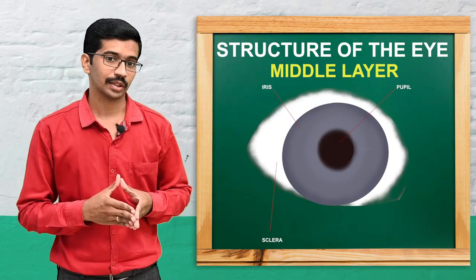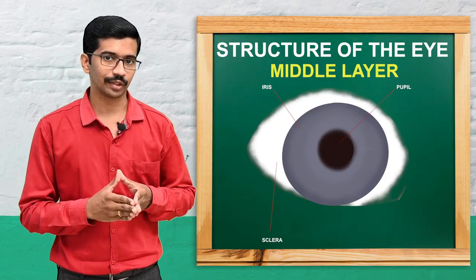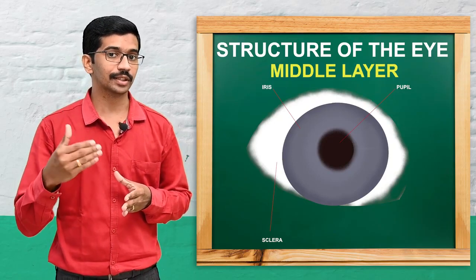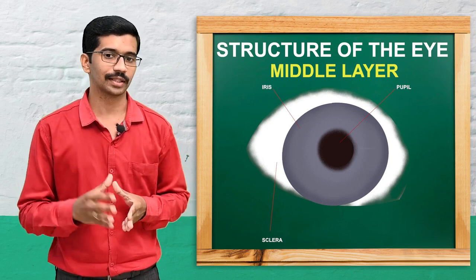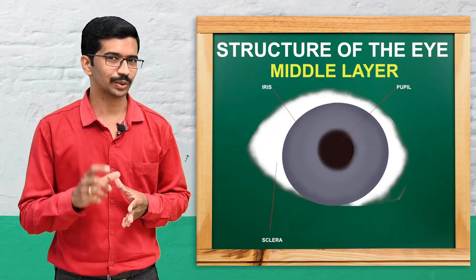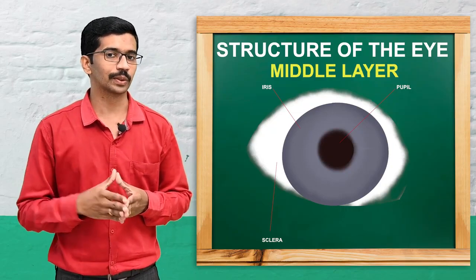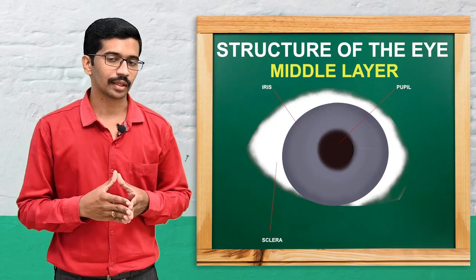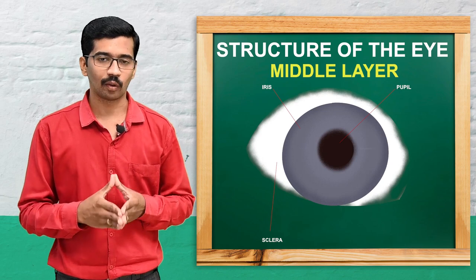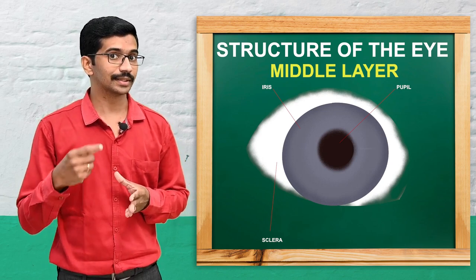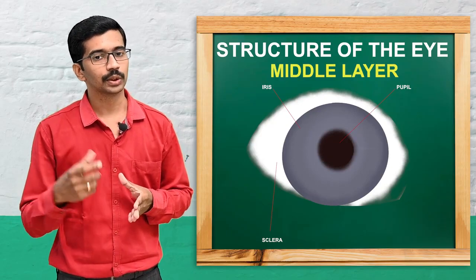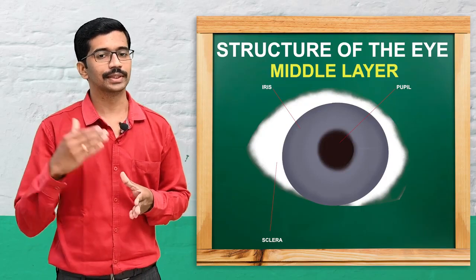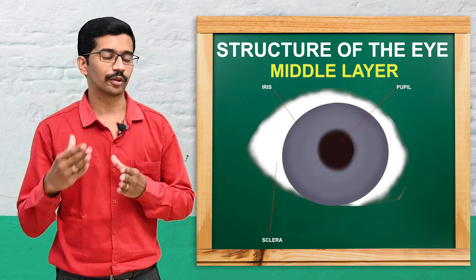The iris is an extension from the ciliary body and is the colored visible part of the eye. It is usually brown in color, though depending on genetic factors it may be silver or blue. At the center of the iris there is an aperture called the pupil, through which light rays enter the eyeball and fall on the lens. These are the structures of the middle layer of the eyeball.